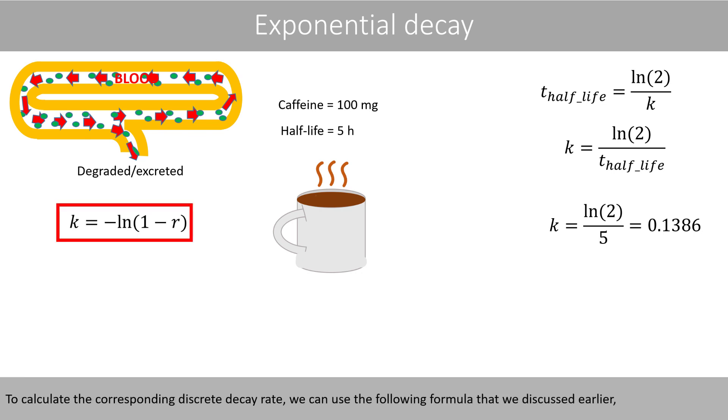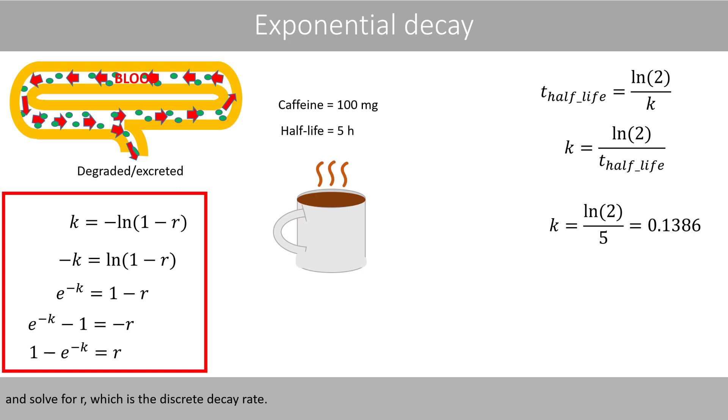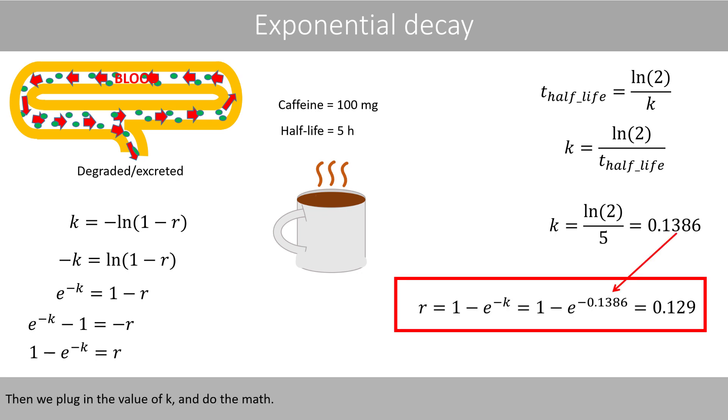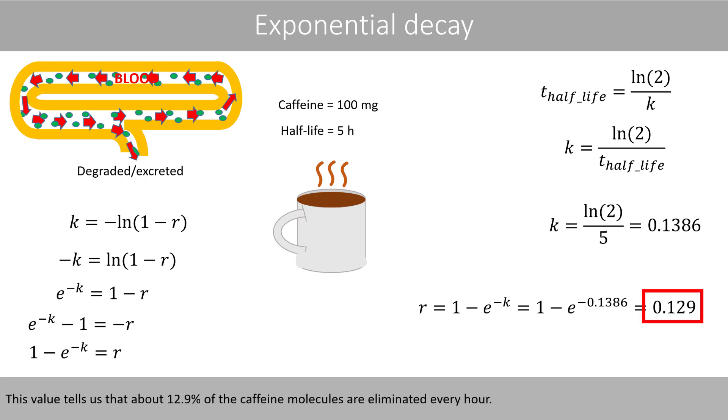To calculate the corresponding discrete decay rate, we can use the following formula that we discussed earlier and solve for r, which is the discrete decay rate. Then we plug in the value of k and do the math. This value tells us that about 12.9% of the caffeine molecules are eliminated every hour.